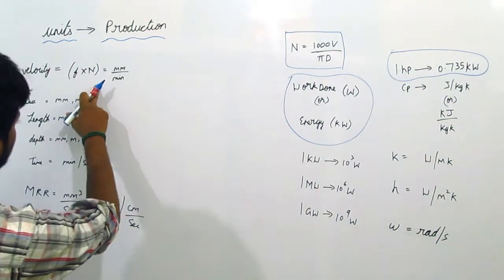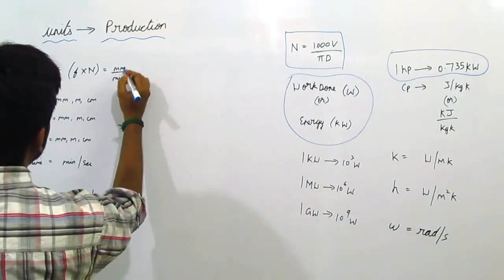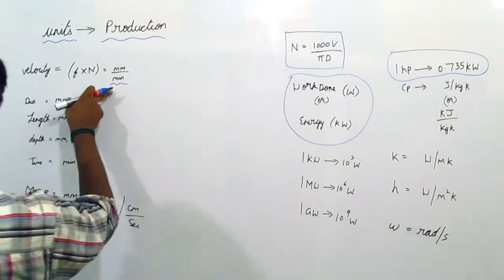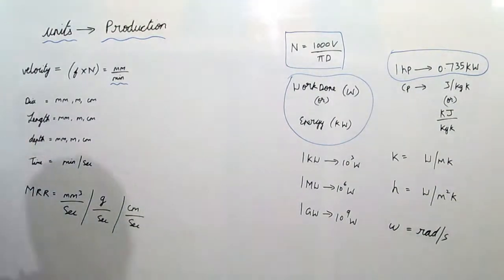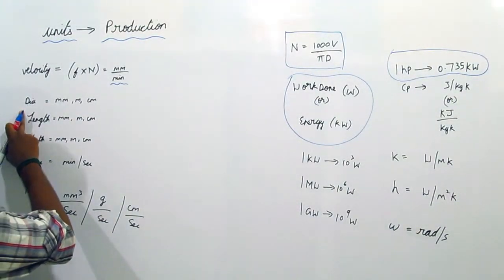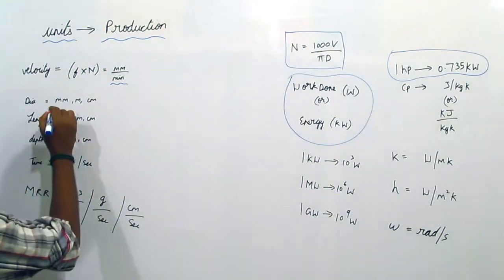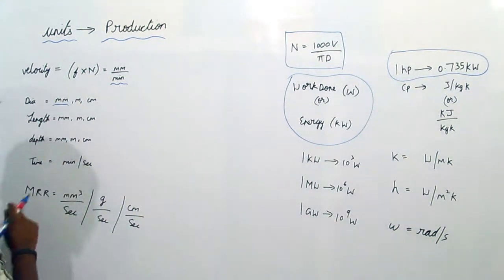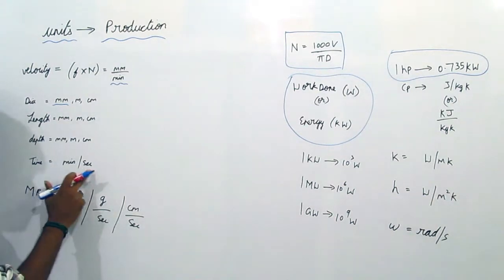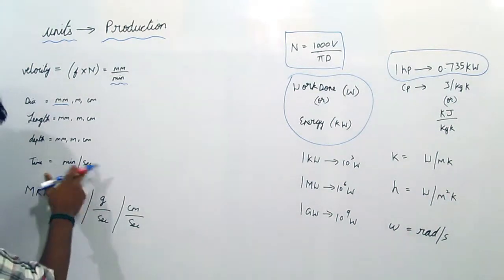Next is diameter. Diameter is given in mm, meter, or centimeter, but mostly it is given in mm. Length and depth are also mostly in mm. Time is given in minute or second.